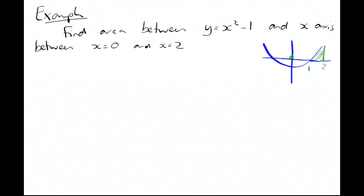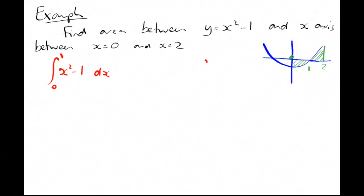We're trying to find this area. Remember, if you just integrate between 0 and 2, the negative part between 0 and 1 is going to cancel with some of the positive part, and you won't get a true answer. So you have to split the integration: the integral of x squared minus 1 between 0 and 1, and between 1 and 2.